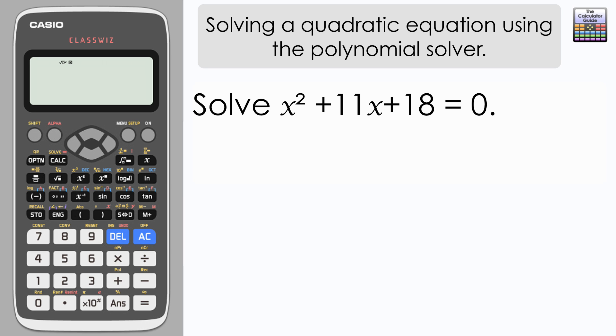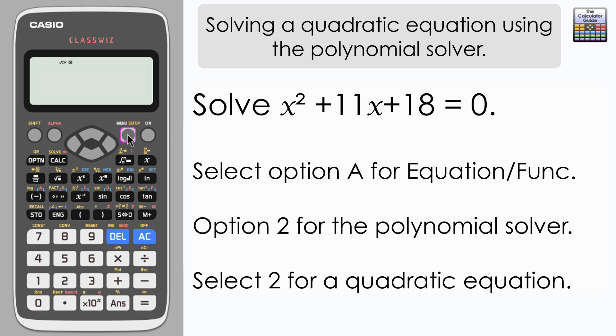The first equation is x squared plus 11x plus 18 equals 0. To access the polynomial solver we need to press menu and then navigate down to option A, Equation/Function.